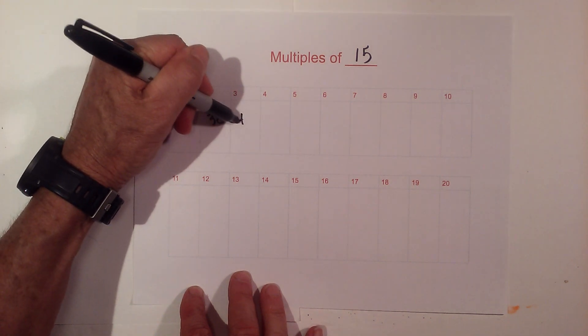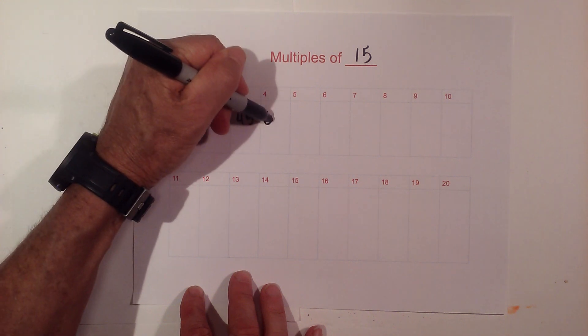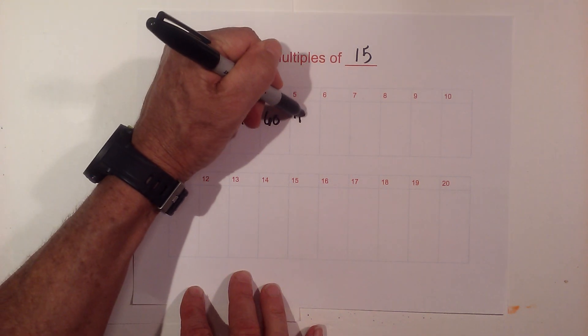Then we have 30, 45, times 4 is 60, times 5 is 75.